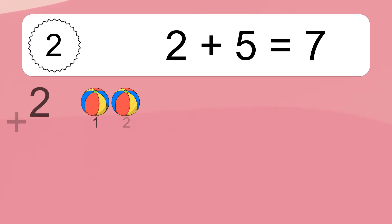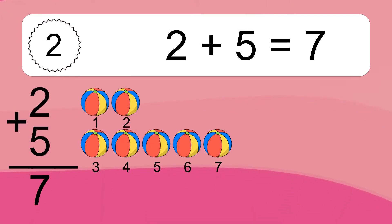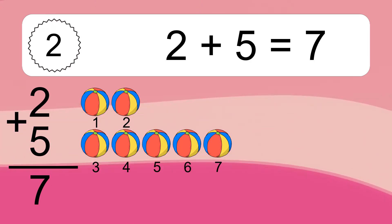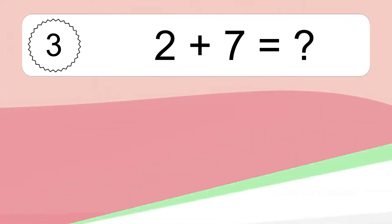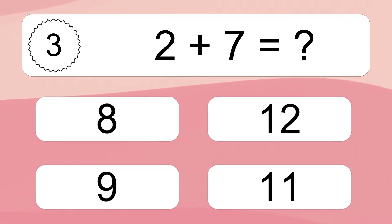2 plus 5 equals what? 2 plus 5 equals 7. Let's count it. 1, 2, 3, 4, 5, 6, 7.